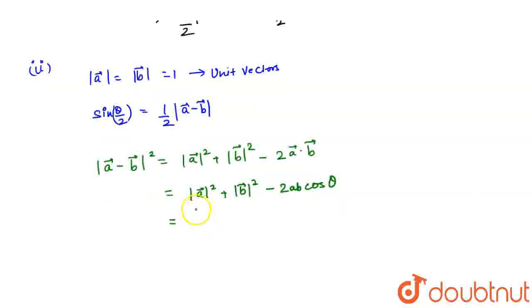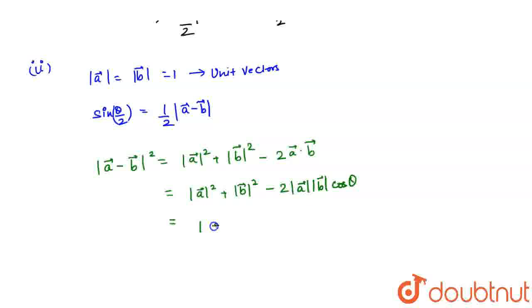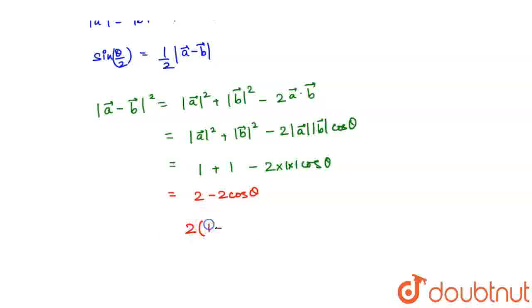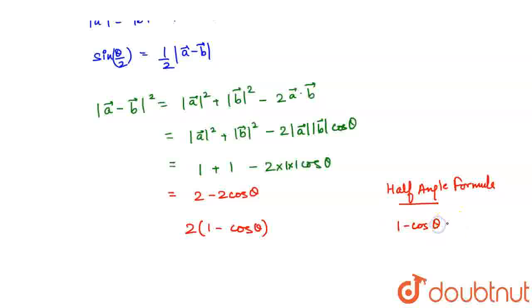Just plugging in the values, it would be 1 + 1 − 2(1)(1)cos(θ), which gives 2 − 2cos(θ). Taking 2 common, I get 2(1 − cos(θ)). By the half angle formula, 1 − cos(θ) can be written as 2sin²(θ/2). So this implies |a − b|² is equal to 2 × 2sin²(θ/2), which equals 4sin²(θ/2).